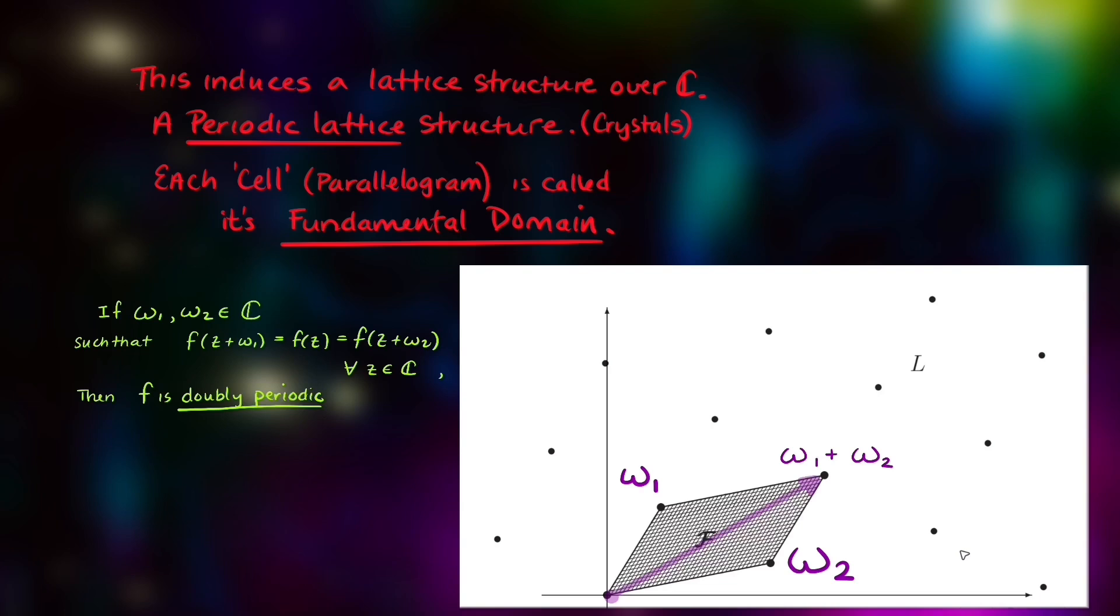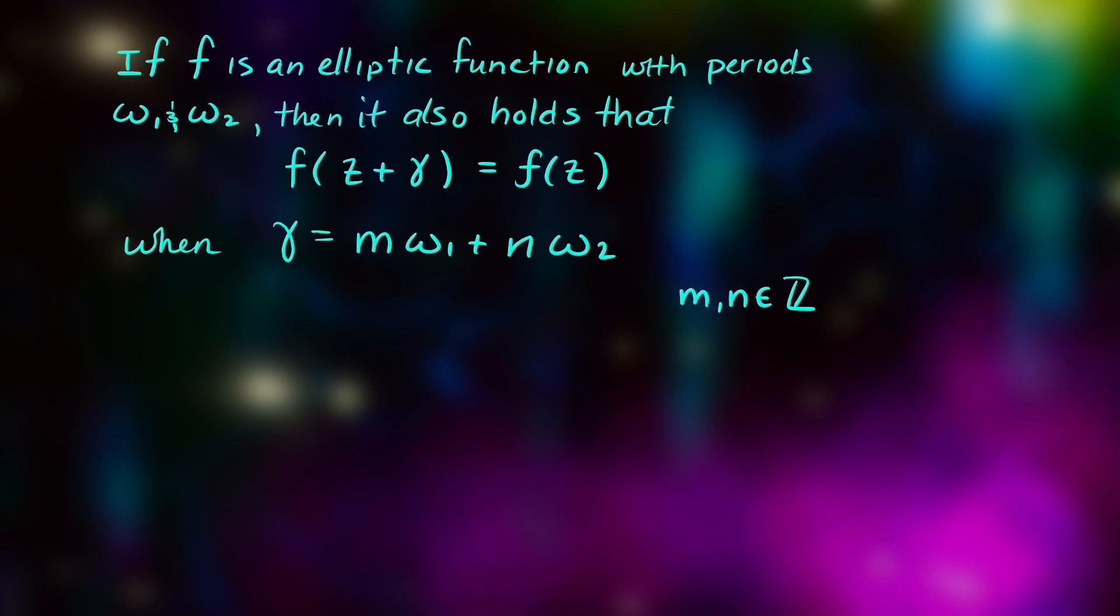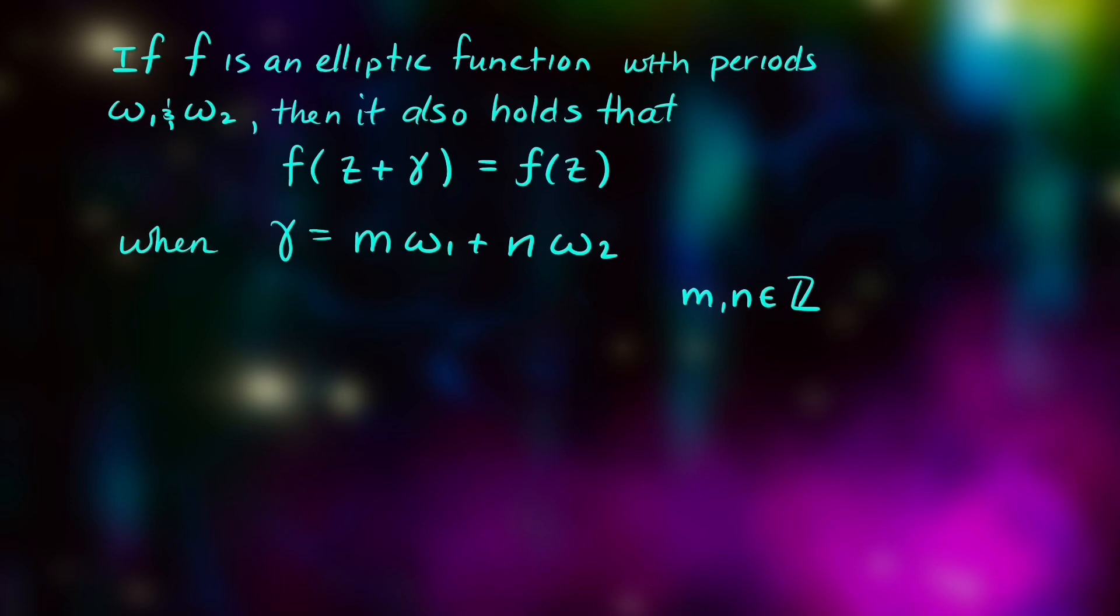Now, this lattice structure can also be viewed through the ideas in group theory. But if f is an elliptic function, and gamma is a linear combination of these periods, then f of z plus gamma equals f of z holds true.